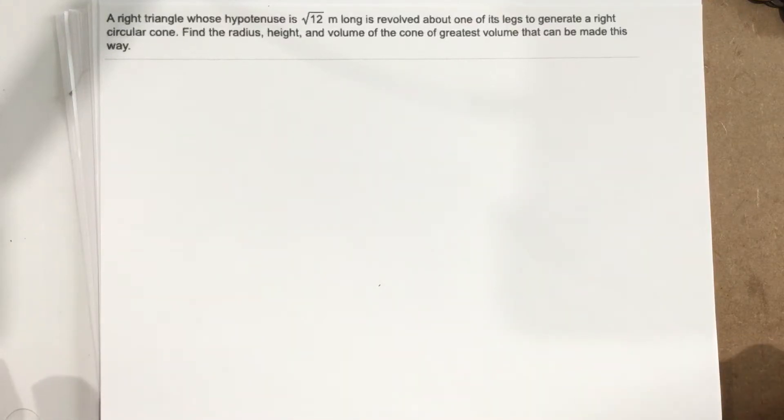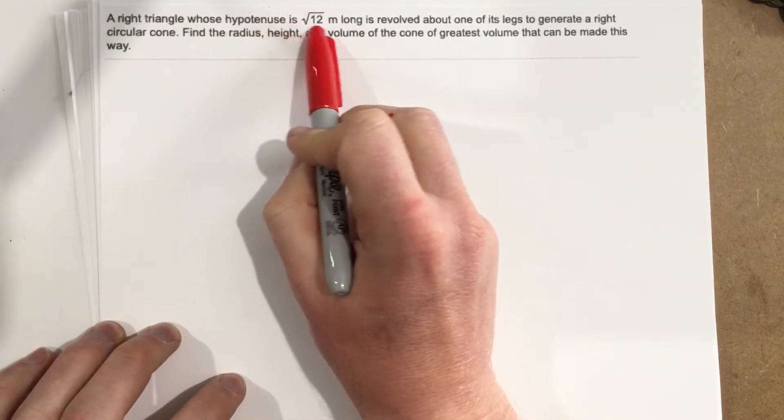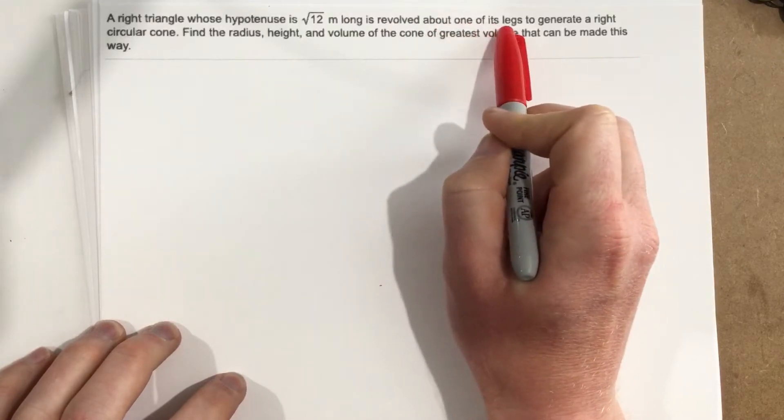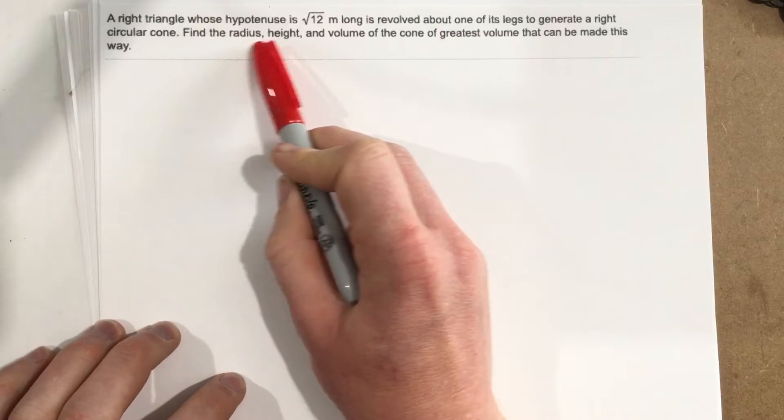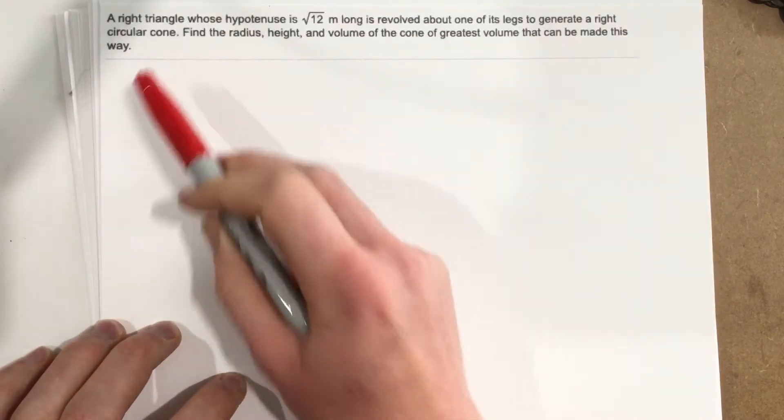This is problem number three from section 4.6. A right triangle whose hypotenuse is √12 meters long is revolved around one of its legs to generate a right circular cone. Find the radius, height, and volume of the cone of greatest volume that can be made this way.